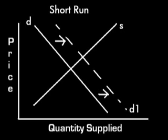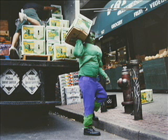A short run is a time too short to change plant capacity but long enough to use a fixed plant more or less intensively. For example, a factory needs to create a larger supply of widgets. There is not enough time to create new technology at the moment. The factory owner decides to have his workers work an extra three hours to increase production and meet the new demand.